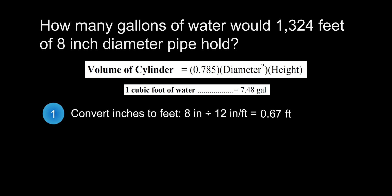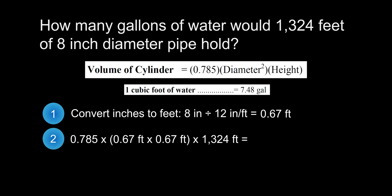In the next step, because a pipe is a cylindrical shape and we need to know the volume that it can hold, we will use the volume of a cylinder equation. So let's plug our numbers into it: 0.785 times the diameter squared, which is 0.67 feet times 0.67 feet, multiplied by 1,325 feet — the length of the pipe — gives us 467 cubic feet.